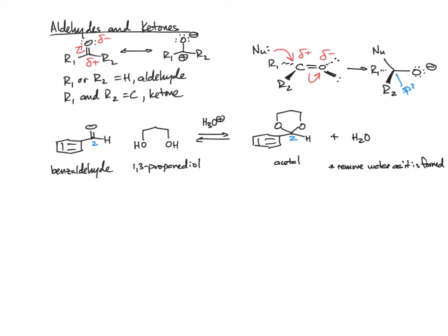Another way to drive the equilibrium is to add an excess of one starting material. If we have benzaldehyde in one molar equivalent and use ten molar equivalents of the diol, we're going to consume it much faster to push it towards the acetal. If we wanted to go in the reverse direction, we would flood the reaction with water to push the equilibrium back. That's what we're talking about when we're controlling this equilibrium.